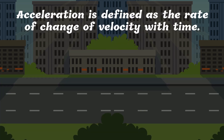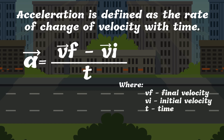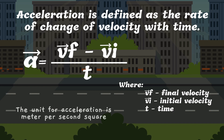Acceleration is defined as the rate of change of velocity with time. Thus, acceleration is equal to change in velocity divided by change in time. Therefore, the formula for acceleration is: acceleration equals final velocity minus initial velocity, divided by time. The unit for acceleration is meter per second squared.